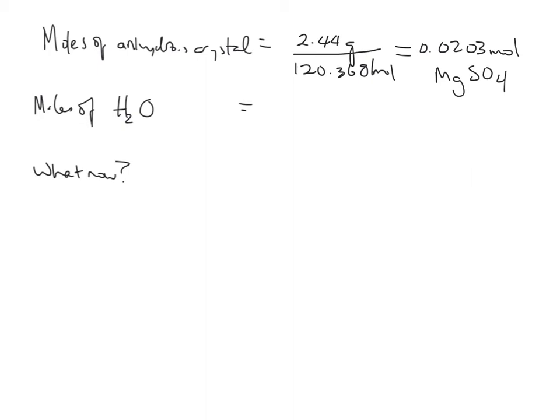We then need the moles of water molecules, and that is 2.56 grams. That's coming from your table, you just found that. Divided by the molar mass of water is 18.02 grams per mole, and that gives you 0.142 moles of water.